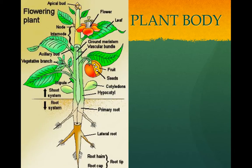The nodes are where the leaves are attached, and the internodes are the stem between the nodes.